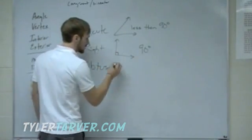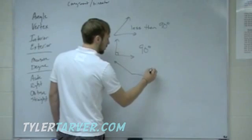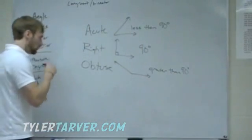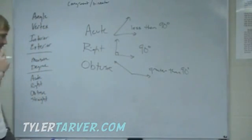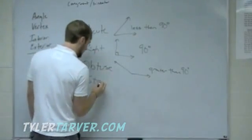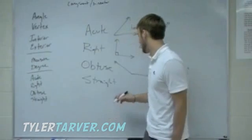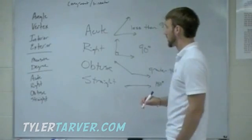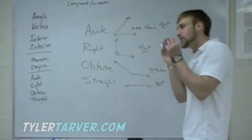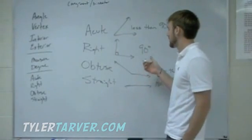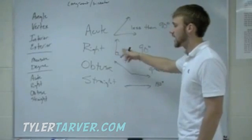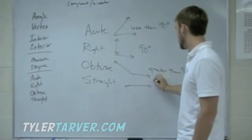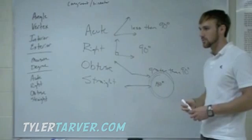Obtuse is greater than 90 degrees. So you've got acute, right, and obtuse. A straight angle is the last one — you won't see it a lot. It's called straight; usually you just call it a line, but it is exactly 180 degrees, all the way across. Acute is less than 90 — a lot of people remember that as 'it's a cute little angle.' Right is exactly 90. Obtuse is bigger than 90. And a straight line is always 180 degrees.